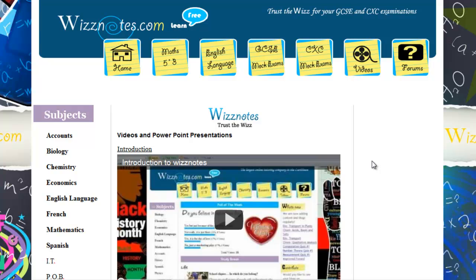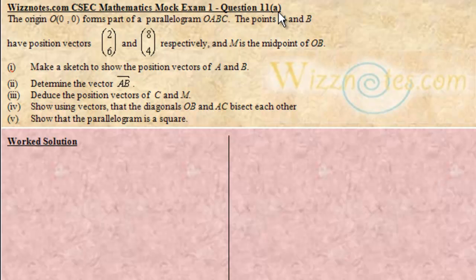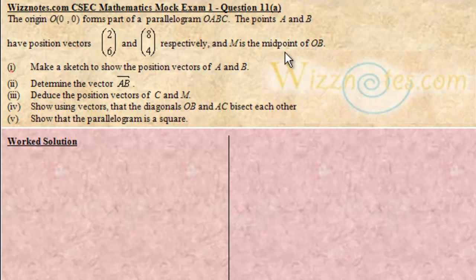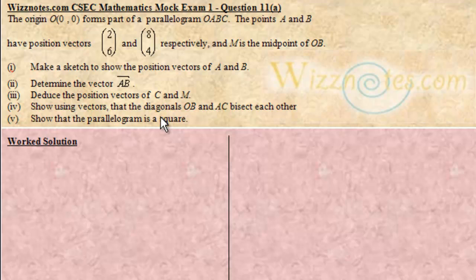Welcome to wisnotes.com mathematics video tutorials. Question 11a reads: The origin O(0,0) forms part of the parallelogram OABC. The points A and B have position vectors (2,6) and (8,4) respectively. M is the midpoint of OB. We are to make a sketch showing the position vectors of A and B, determine the vector AB, introduce the position vectors of C and M, show using vectors that the diagonals OB and AC bisect each other, and show that the parallelogram is a square.